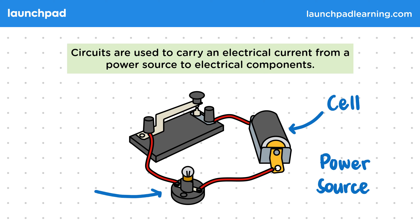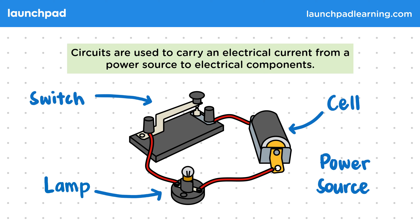Then we have a lamp, which we're trying to power. The electrical current will give energy to this and make it light up. And finally, we have a switch that's used to turn the circuit on or off — this can cut off the supply of energy to the lamp. We'll be seeing many more different types of components throughout the course.